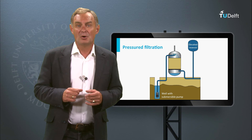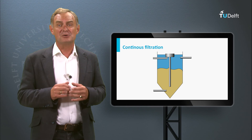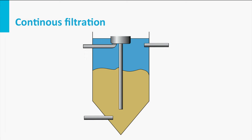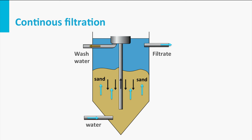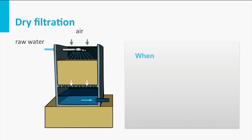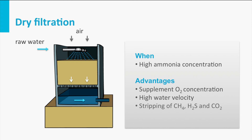Continuous filtration is used when water is extremely dirty and too-frequent backwashing would otherwise be needed. During continuous filtration, the water flows in an upward direction while the sand at the bottom is continuously removed, washed, and dosed back on top of the filter bed. When high ammonia concentrations occur in groundwater, oxygen depletion can happen. To avoid this, filtration of water through the filter bed is accompanied by an airflow, so that oxygen from the air is continuously exchanged with the water, avoiding anaerobic conditions. This type of filter is called a dry filter or trickling filter.